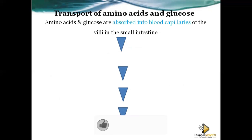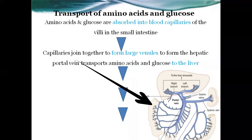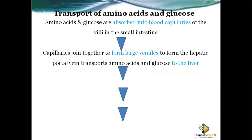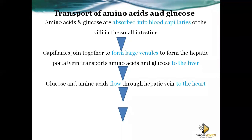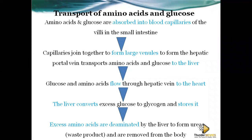Amino acids and glucose are absorbed into the blood capillaries of the villi in the small intestine. The capillaries join together to form venules, which transport amino acids and glucose to the liver via the hepatic portal vein. The liver converts excess glucose into glycogen for storage, and excess amino acids are deaminated and excreted as waste.